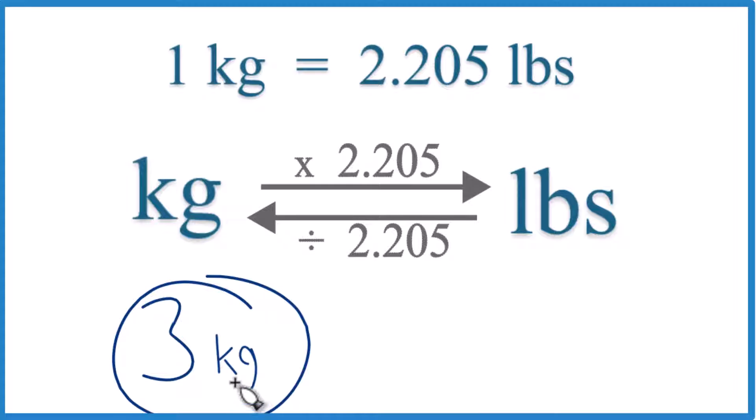Let's convert 3 kilograms to pounds. Here's how you do it. 1 kilogram equals 2.205 pounds.